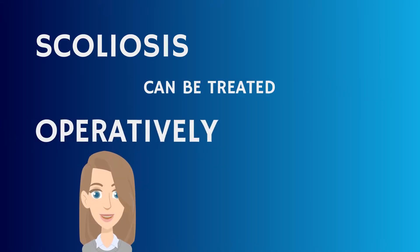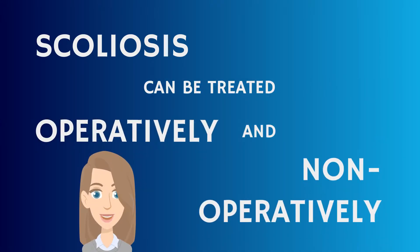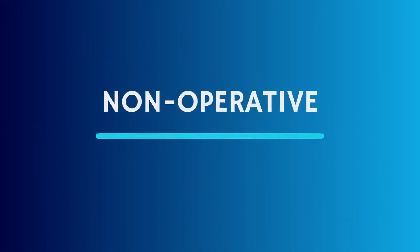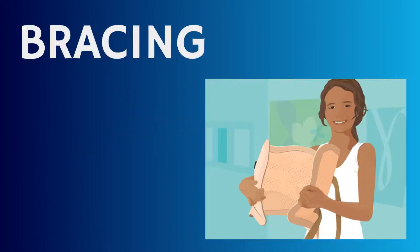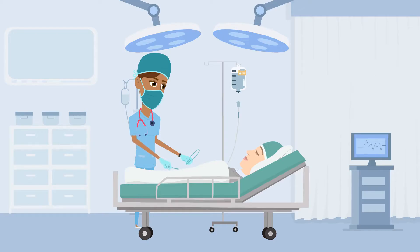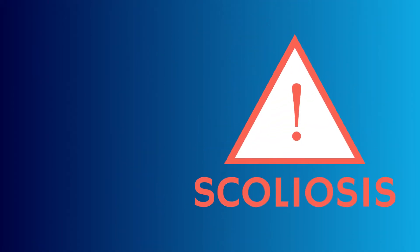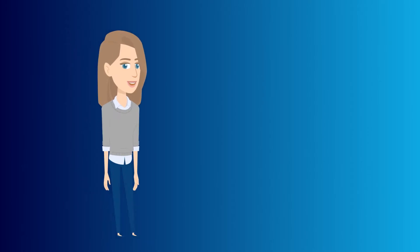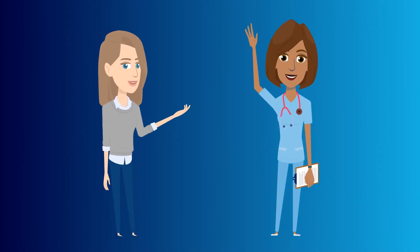Scoliosis can be treated operatively and non-operatively, depending on how large the curve is. Non-operative treatment includes bracing. Operative treatment is surgical intervention and is only considered for large curves, or if the curve is likely to keep progressing after the patient has stopped growing. Learning you have scoliosis can be scary, but your doctors are there to help and give you support. I hope this video helped answer your questions. Thanks for watching.